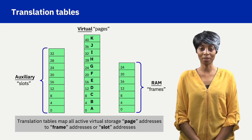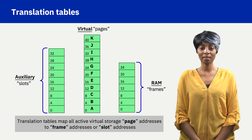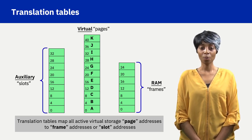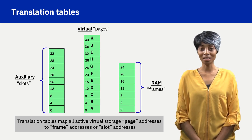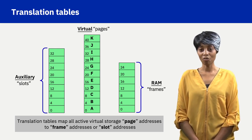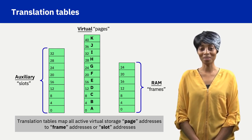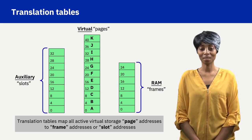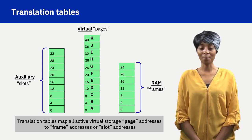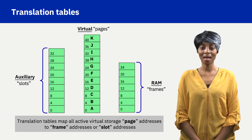The RAM resource is segmented into frames, where each frame has a unique address from the pool of available primary processing memory. The auxiliary resource is segmented into slots, where each slot has a unique address from the pool of available secondary processing memory. System translation tables are available to map page addresses to frame addresses and slot addresses.